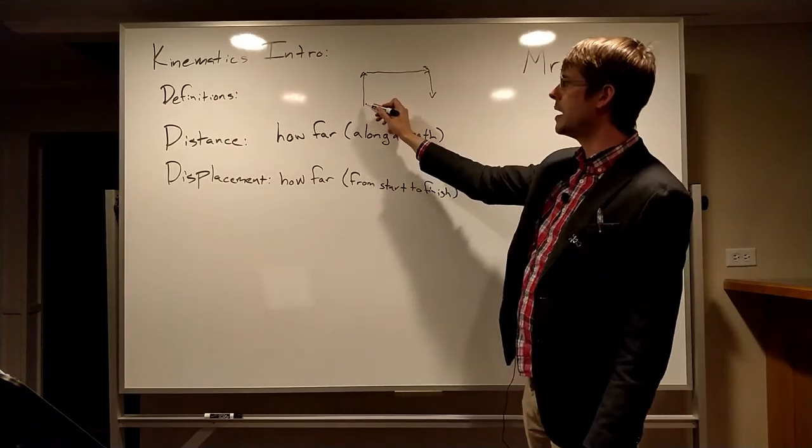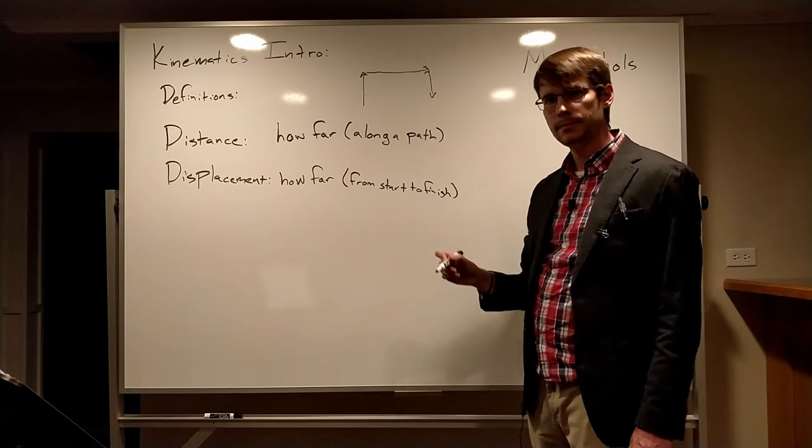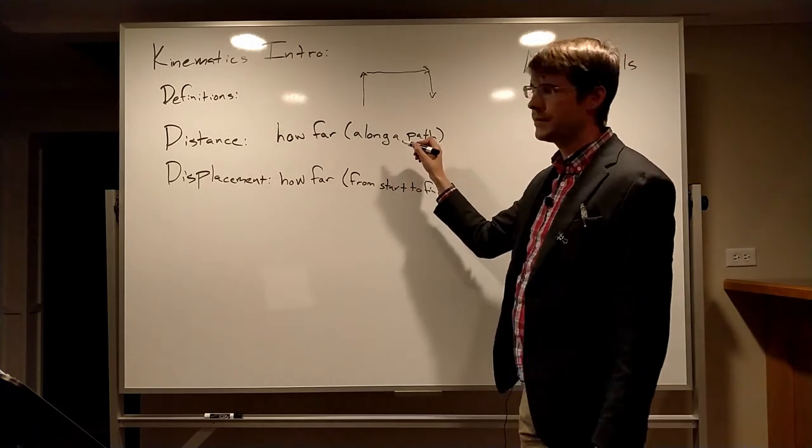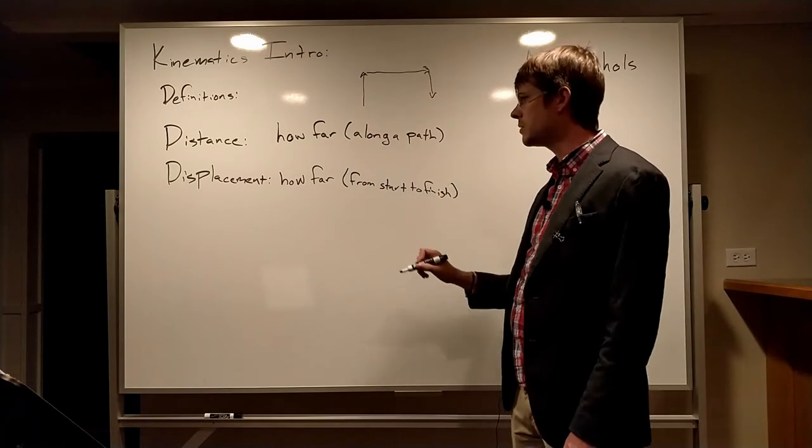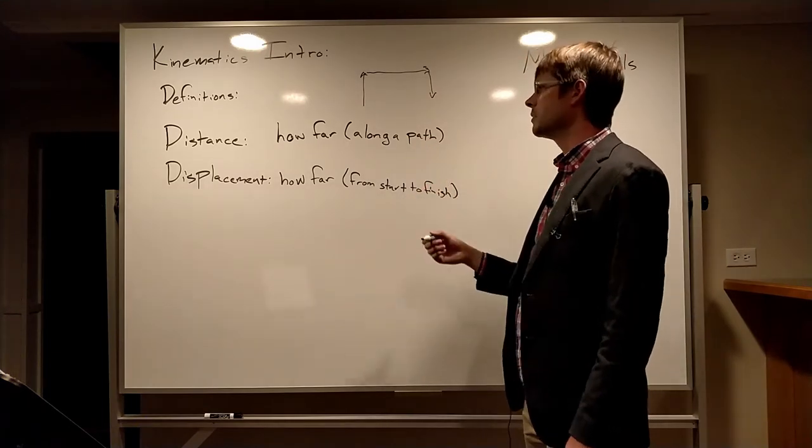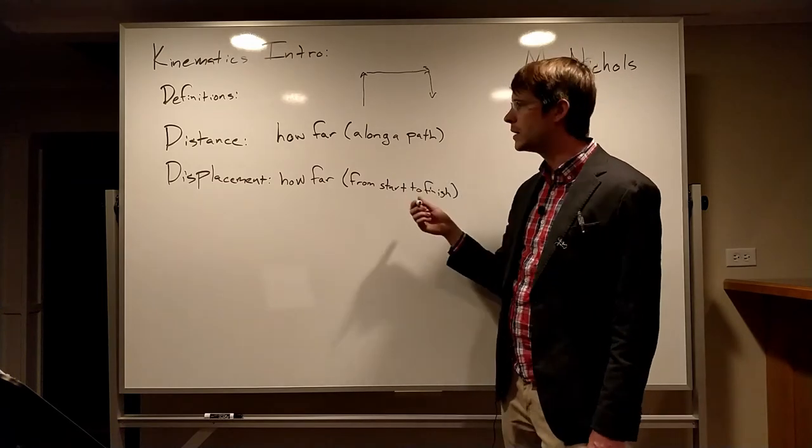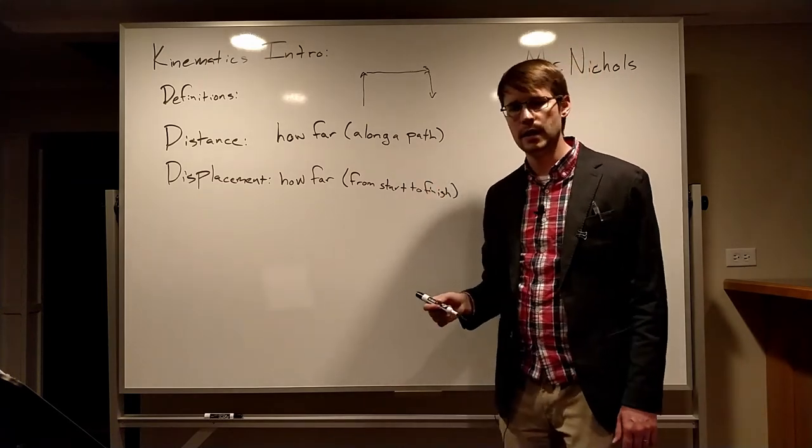Whereas that would be a displacement of three meters to the right. So the other big distinction here is that distance does not have a direction. It is a scalar, not a vector, and displacement is a vector. It has a direction.